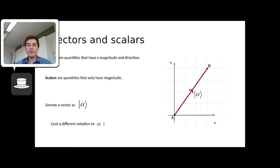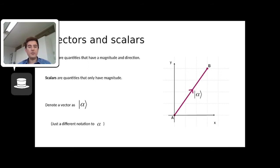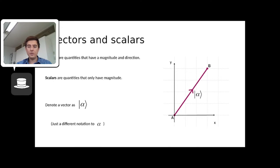Scalars, on the other hand, are things which do not have any direction, but they do have a magnitude. Classic examples of scalars are things like energy, or your mass in kilograms. There's no particular direction to your mass in your body, and likewise with energy there's no particular direction. So these are scalars.